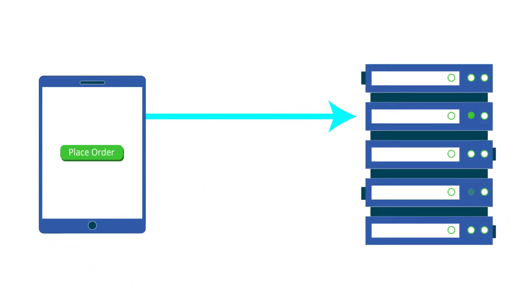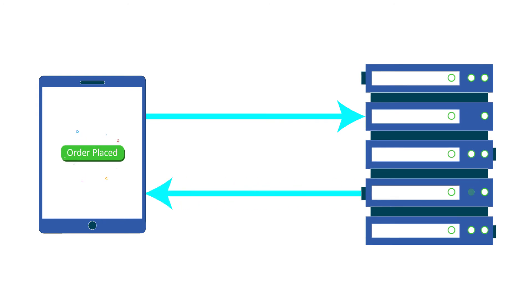An API, just like the order booker, sends requests and in turn receives data as a response, connecting the two parties.